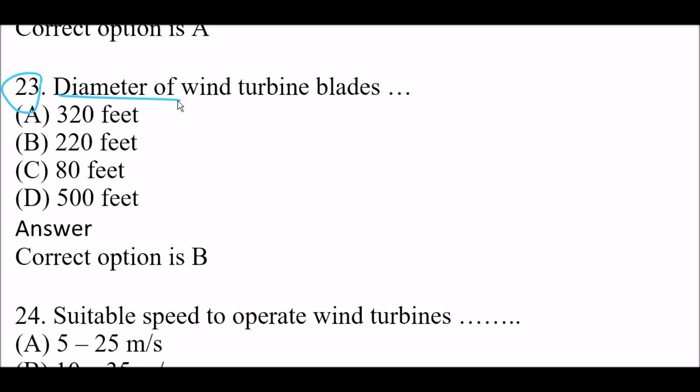Next question: what is the diameter of wind turbine blades? Option A: 320 feet. Option B: 220 feet. Option C: 80 feet. Option D: 500 feet. Right answer is Option B — 220 feet. The diameter of wind turbine blades is 220 feet.